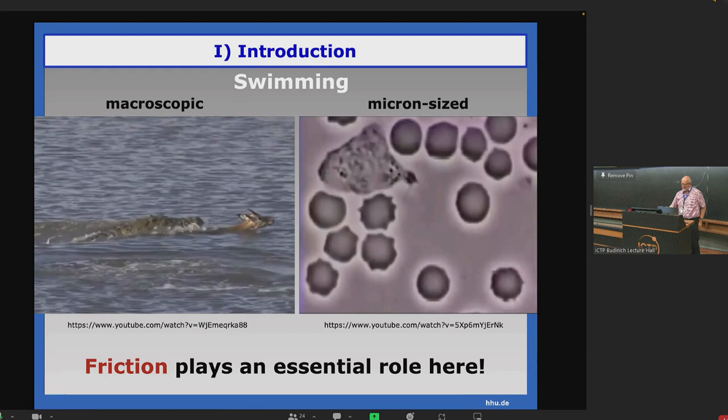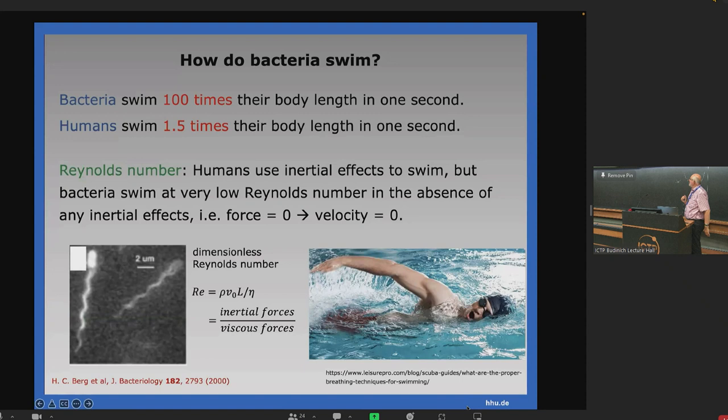This is a pretty new research field now in physics. If you go to the micron scale and estimate the typical Reynolds number, the ratio between inertial forces and viscous forces, then viscous forces are very large relative to inertial forces. This has to do not only with the fact that eta, the shear viscosity of the solvent is large, but in particular that the typical length scale of the swimming object L is very small.